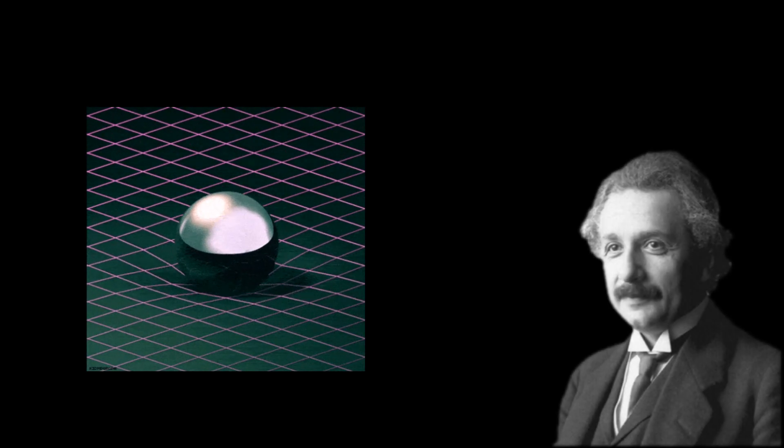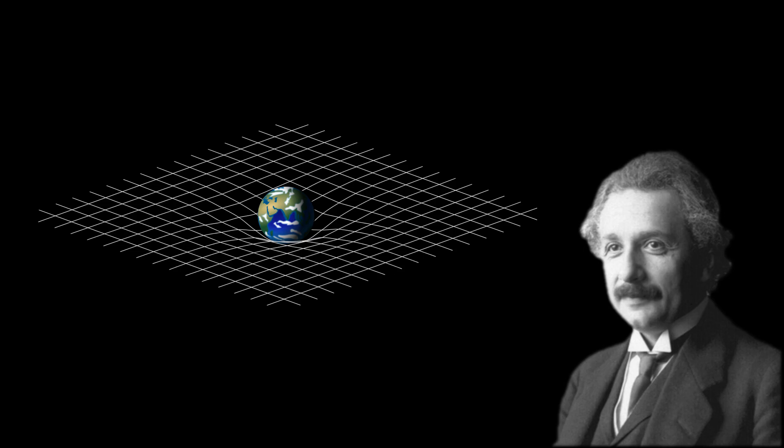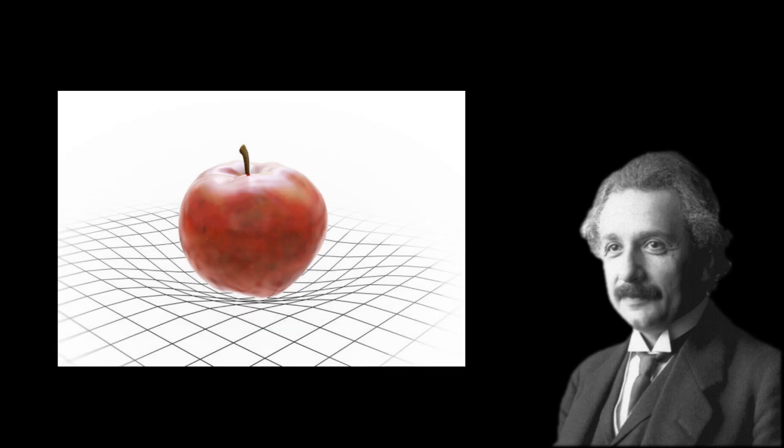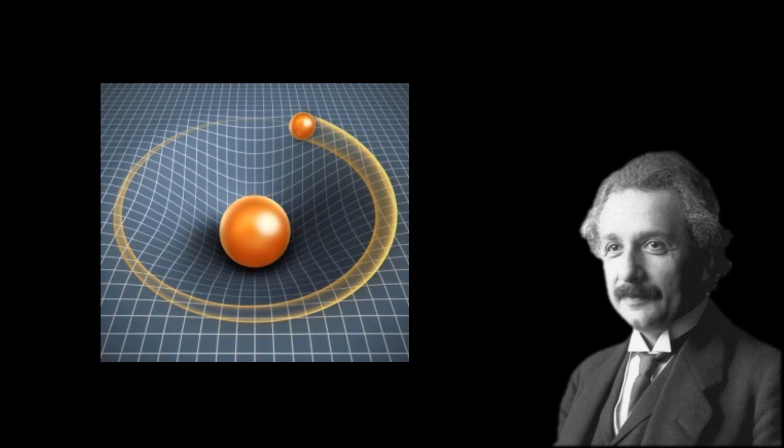Einstein accounted for the same motion in terms of a different theory in which he invented — yet again, not discovered — another mathematical concept called Curved Space-Time. When a heavy person sits on a sofa, the sofa noticeably curves. Similarly, in the presence of Earth, a relatively heavy body, the space-time around it curves such that an apple in its vicinity appears to freely fall while sliding down along the curved space-time.